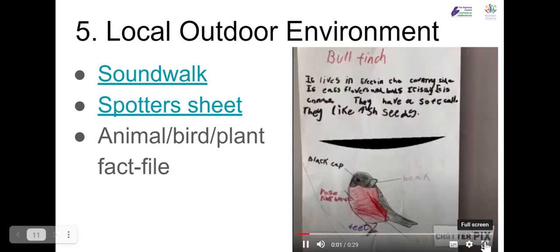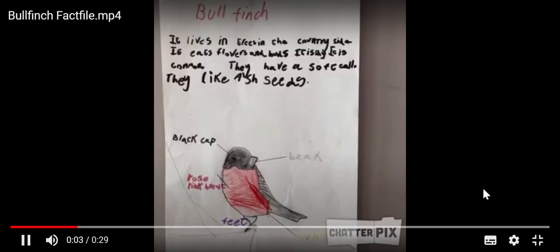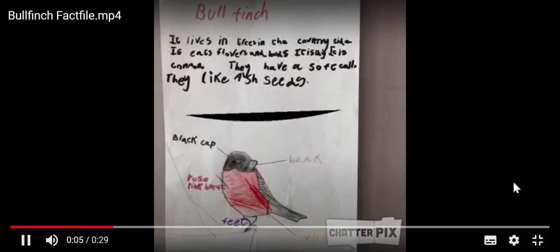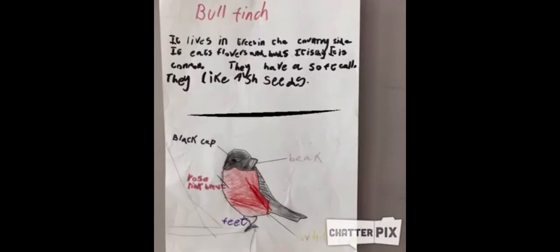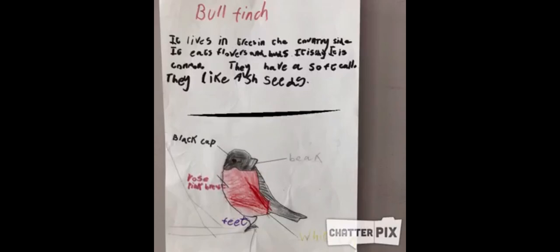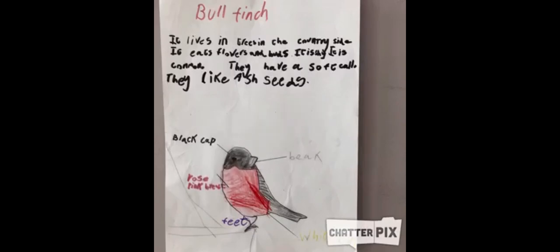Bonjour! Here's a fact file of a bullfinch. Activity one: read the text and try to remember two facts. Activity two: read the labels on the picture — how many of these words do you know in French? Activity three: make a list out loud of as many colours and parts of the body as you can in French. Activity four: choose your own bird, write a fact file, and draw and label a picture.